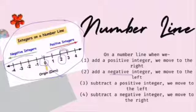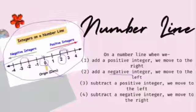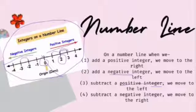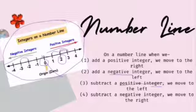If we add a negative integer, we move to the left. For example, if I want to add minus two, here we go — we move left. Subtracting a positive integer means we move to the left. And subtracting a negative integer means we move to the right — here is the negative integer and I move to the right.